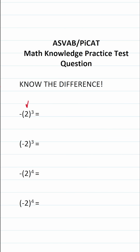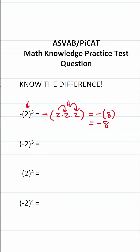For this first one, we have negative parentheses two to the third power. We're going to leave our negative alone — keep that on the outside — and this becomes two times two times two. Two to the third power is two multiplied by itself three times. Two times two is four, four times two is eight, so this is negative times eight. A negative times a positive is going to be a negative, so this is negative eight.